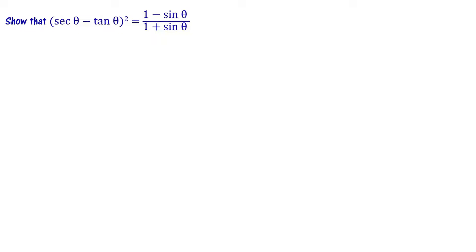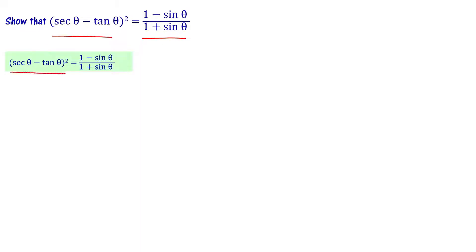Show that sec theta minus tan theta whole square equals 1 minus sin theta divided by 1 plus sin theta. Looking at LHS, we have sec theta minus tan theta whole square — this is of the form a minus b whole square, which expands to a squared plus b squared minus 2ab.